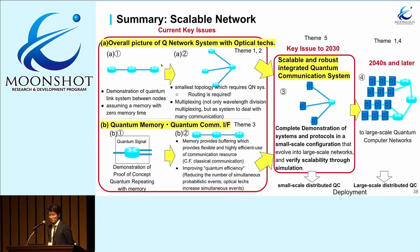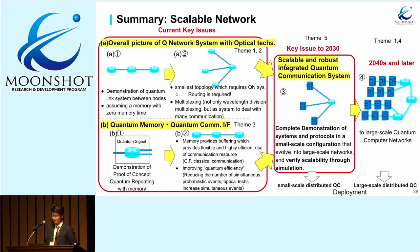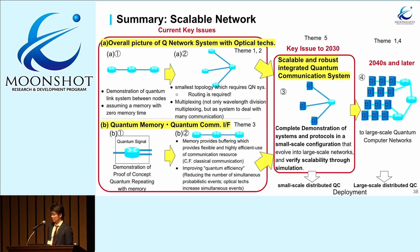Summary: we are working on realizing the scalable and robust quantum network. The key issue to 2030 is, as in our title, a scalable and robust integrated quantum communication system. We divide the problem into two parts and work on everything with cooperation. These will evolve to large-scale quantum networks for large-scale distributed quantum computation.